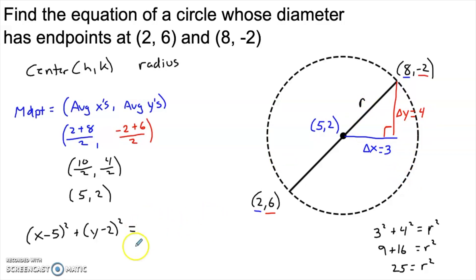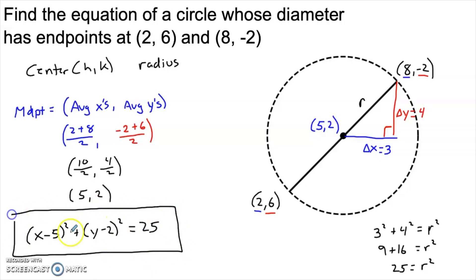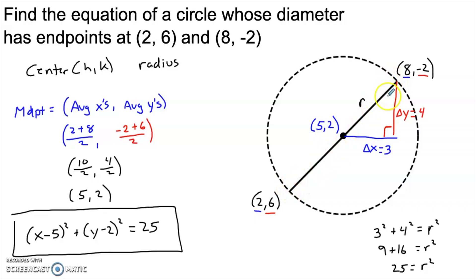But remember, it's the radius squared that goes in the equation — so the equation is (x - 5) squared plus (y - 2) squared equals 25. By the way, when I drew the circle I put the diameter at an angle. That may have seemed odd, but the reason is that I knew we'd need to use Pythagoras, so I wanted room to draw the triangle.